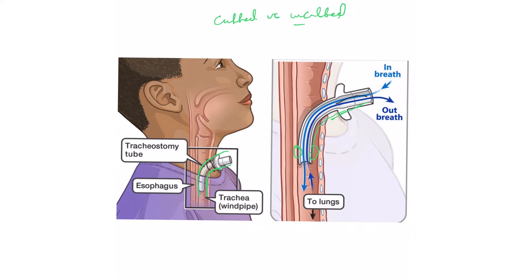You want to make sure it's not too short because too short will irritate the posterior tracheal wall and may cause problems. Too long may curve anteriorly and cause irritation of the anterior wall.